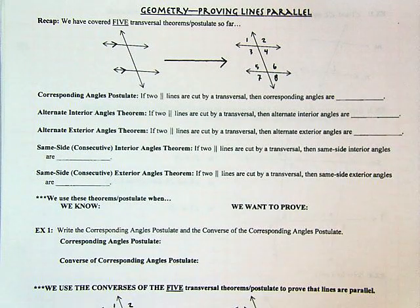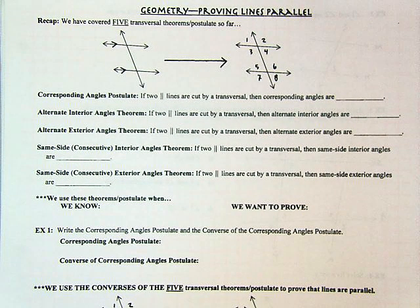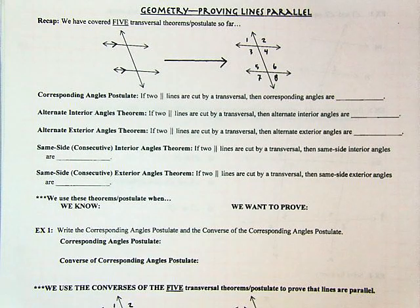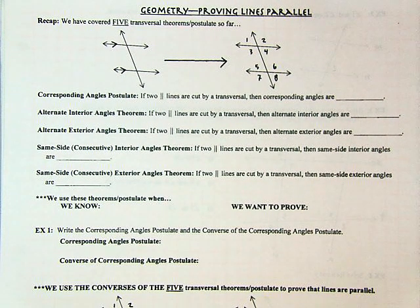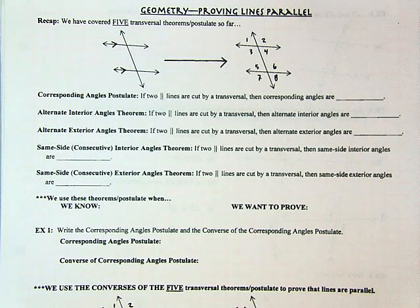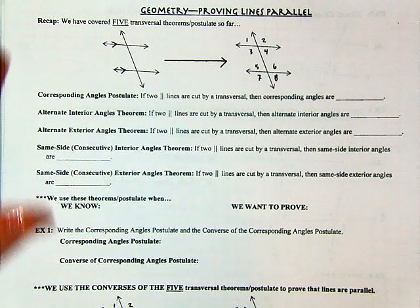Today we are taking on how to prove that lines are parallel. I wanted to start off with just a recap of what we have already seen. We have already covered five transversal theorems and a postulate — four that are theorems and one that is a postulate — and they're all contingent on the lines being parallel. So we have to have that as our starting point: we know the lines are parallel.